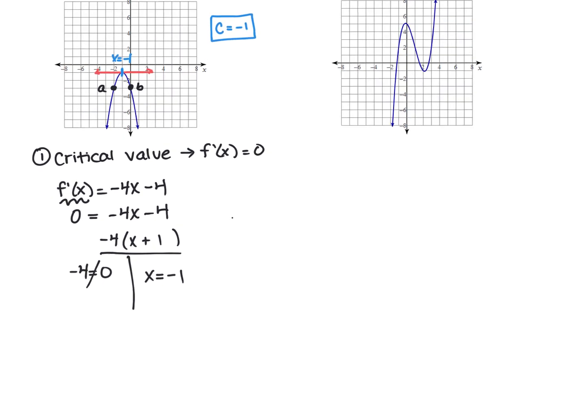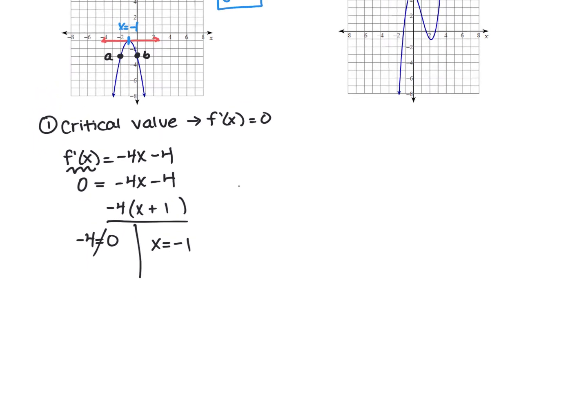So what we should do next is write a statement that shows that we understand the concept that's happening here. So since f of x is a continuous function, or is continuous, over the interval of negative two to zero, and f of negative two equals f of zero, then the c value must equal negative one. So take a minute and jot that down, and then I'll explain it in a second.